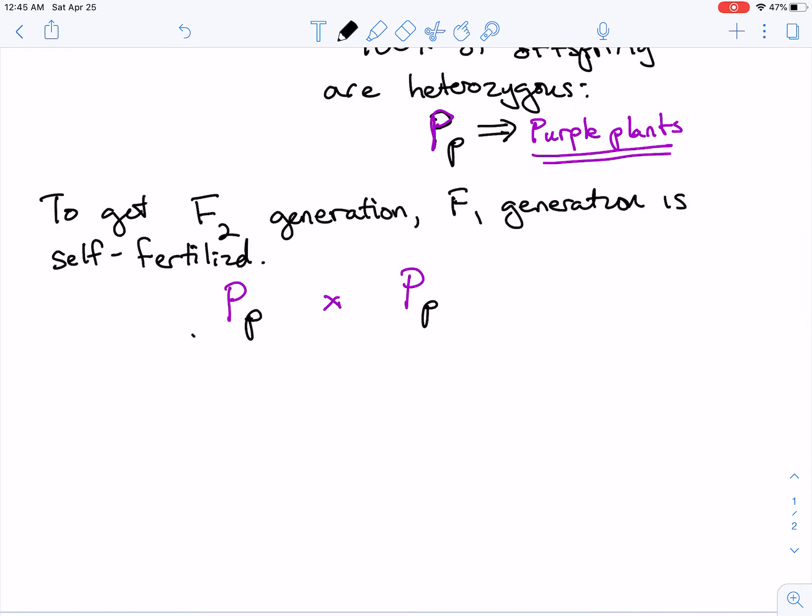So again, this is the genotype, right? This part is the genotype. The phenotype is purple. But they're heterozygous. So what are the possible gametes we can make from these two organisms? They're pretty straightforward.